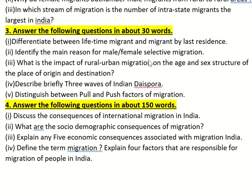Then you have to identify what happens in both of them. What is the impact of rural-urban migration on the age and sex structure of the place of origin and destination?